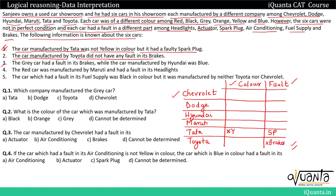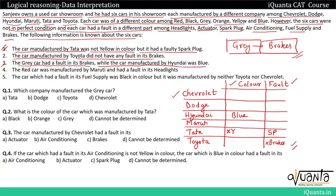The third point says that the gray car had a fault in its brakes. But since we do not know which company has a gray car, let us hold on to this information. Meanwhile, the car manufactured by Hyundai was blue in color. Let us note that the gray car with fault in brakes forms a block we'll use later.